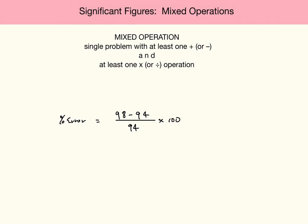Mixed operations are single problems with at least one addition or subtraction and at least one multiplication or division. For example, the percent error problem shown has both of those — an addition/subtraction component and a multiply/divide component. So it is a mixed operations problem.